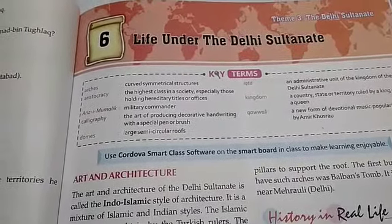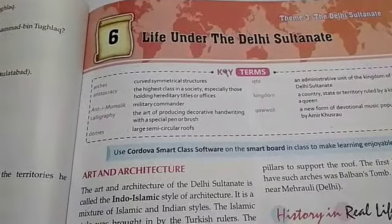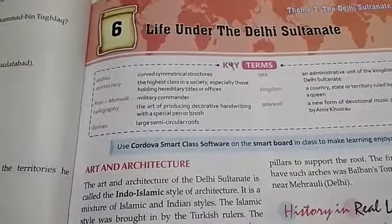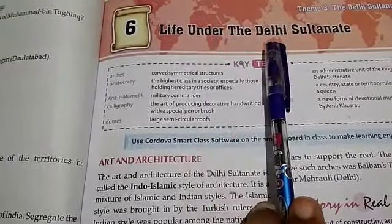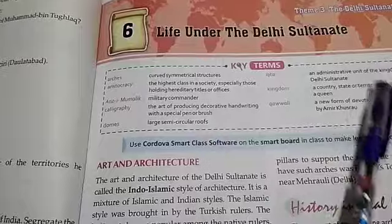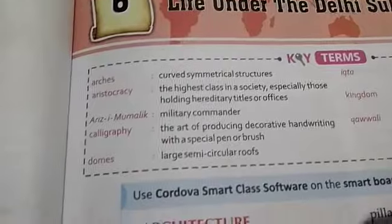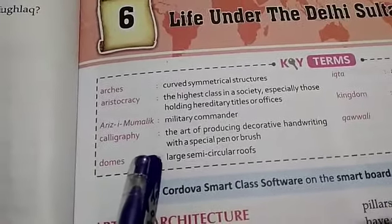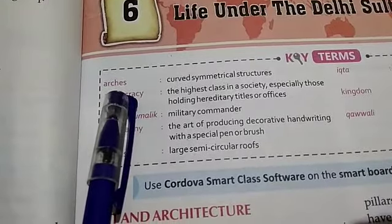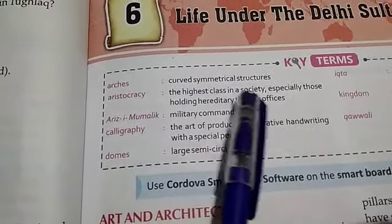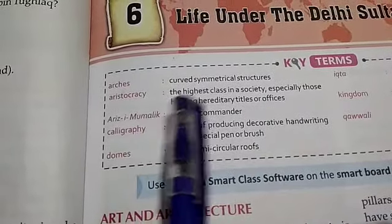Hello everyone, good morning. Today we will read Chapter 6. Our topic is 'Life Under the Delhi Sultanate', Part 1. Here are your key terms: arches — a symmetrical structure; aristocracy — the highest class in society, especially those holding hereditary titles or offices.